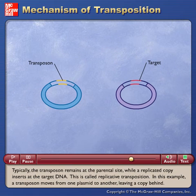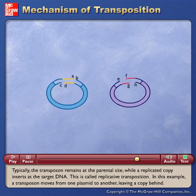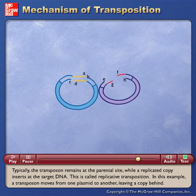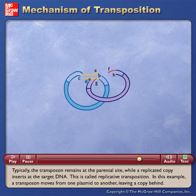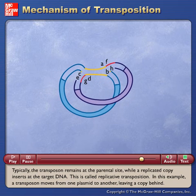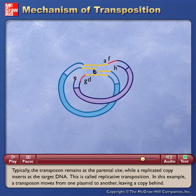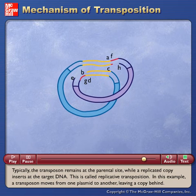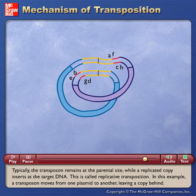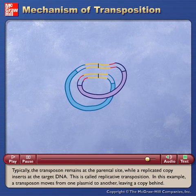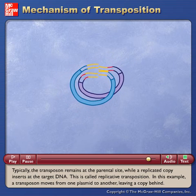Typically, the transposon remains at the parental site while a replicated copy inserts at the target DNA. This is called replicative transposition. In this example, a transposon moves from one plasmid to another, leaving a copy behind.